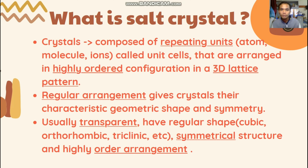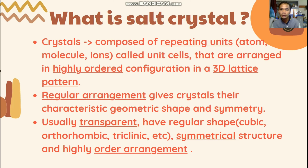For the first slide we are going to talk about salt crystal. Usually we think of crystals as diamonds and minerals, but they're just one kind of crystal. There are actually so many types of crystal structure — for example, salt crystal, snow crystal, and also graphite in our pencil. Crystal or crystalline solid is a material composed of repeating units called unit cells, which can be atoms, molecules, or ions.